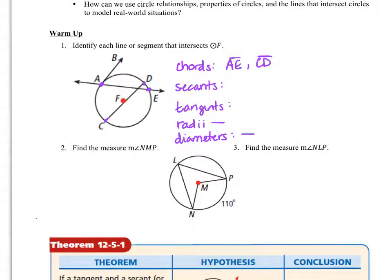AE is going to do double duty because it's also a secant if we write it as line AE. In terms of tangents, we only have one, and that's this one over here, and that's a ray. Ray AB — remember that symbol.